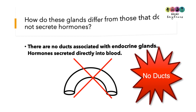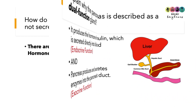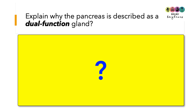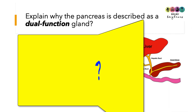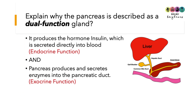No tubes, no ducts. Explain why the pancreas is described as a dual function gland — how does it have two roles? Firstly, it produces and secretes the hormone insulin directly into the blood; that's an endocrine function. It also produces and secretes digestive enzymes into the pancreatic duct; that's an exocrine function.